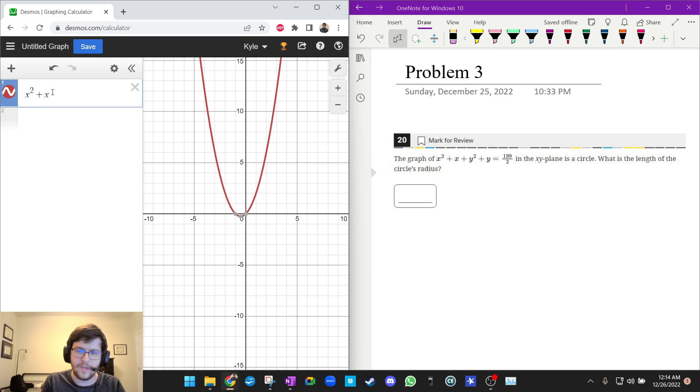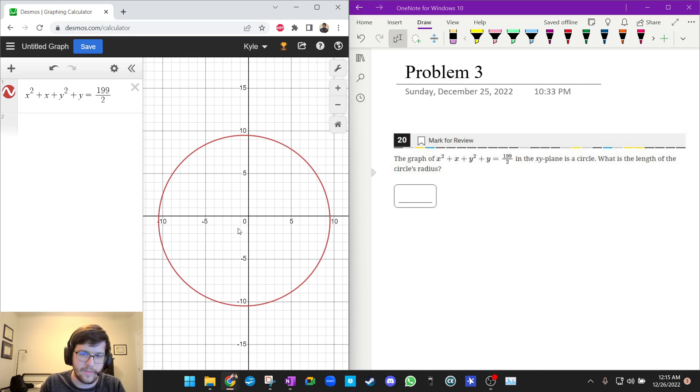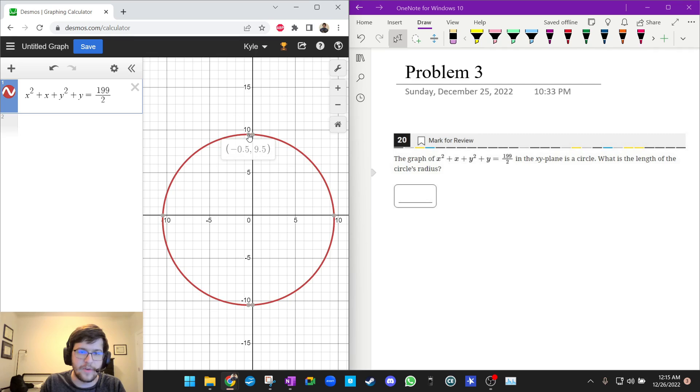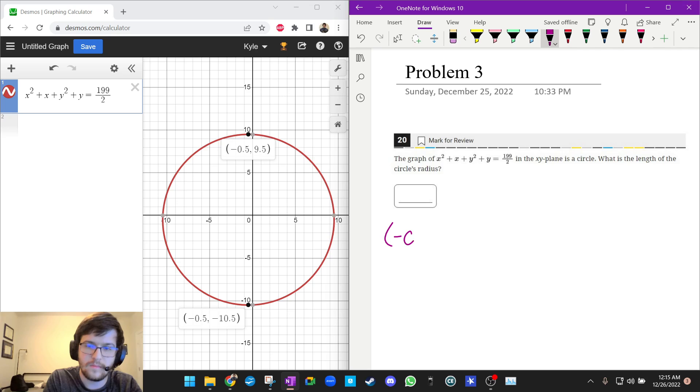Okay, so first I'm going to type in the equation of the circle. And I get my nice picture here. And now I'm going to label the north and south, northmost and southmost points. And I see it's negative 0.5, 9.5. And the other endpoint is negative 0.5, negative 10.5.